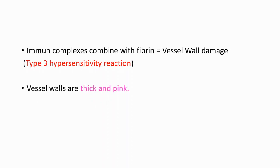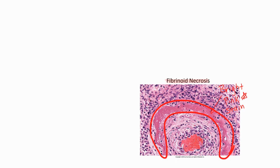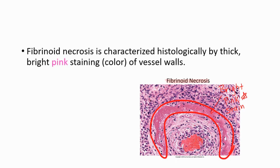On histology we will see thick and pink vessel walls — you are seeing the histology bright pink stain on the vessel walls. It is characterized histologically by thick and bright pink staining color of vessel walls.